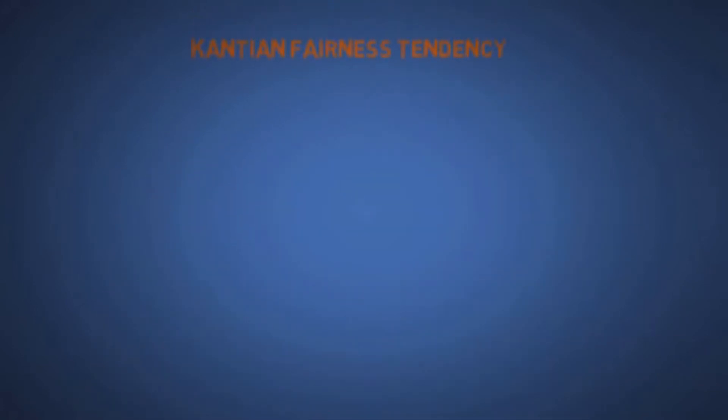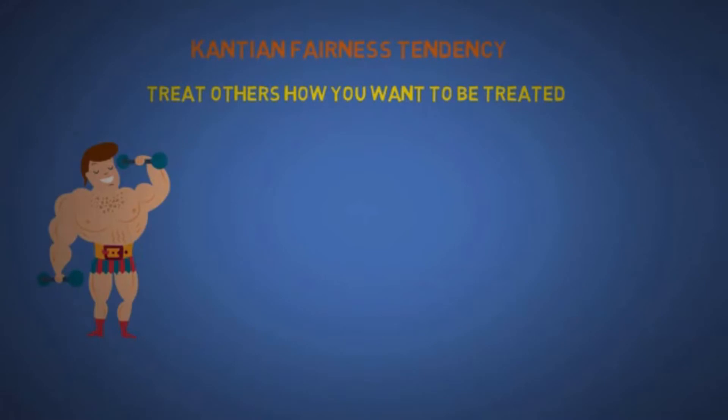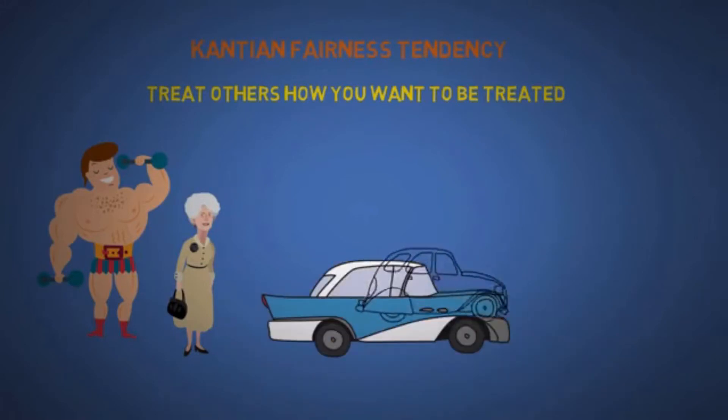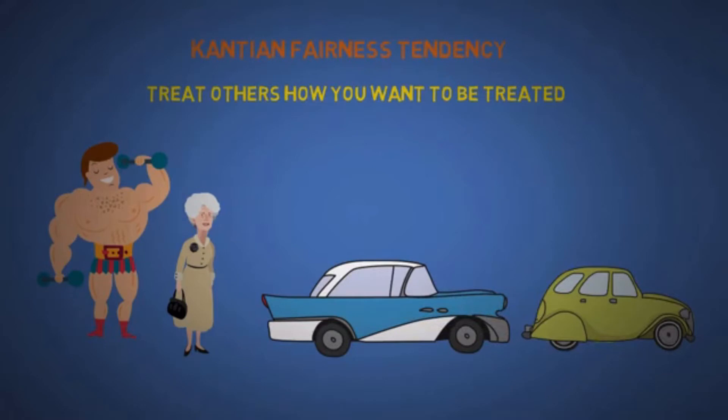The seventh is Kantian fairness tendency, which is pretty much the golden rule: treat others how you want to be treated. It's the bias that makes a 300-pound big guy willing to line up behind an old lady and follow the first-come-first-serve rule. Another example is letting in other drivers on the freeway, believing that they will reciprocate in the future. So think about situations where you get mad at strangers for not sharing who don't even owe you anything.